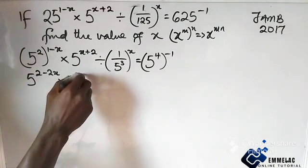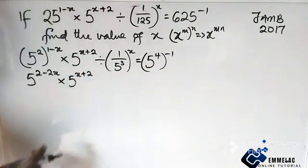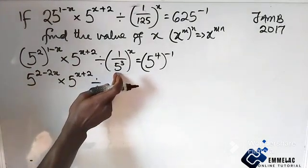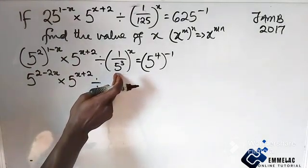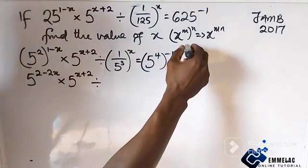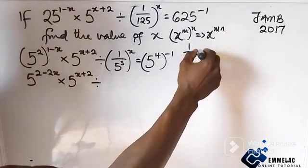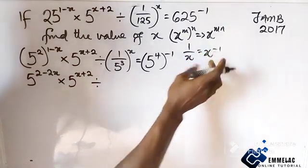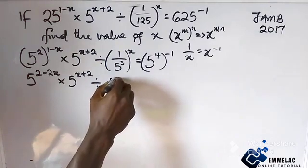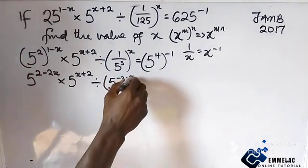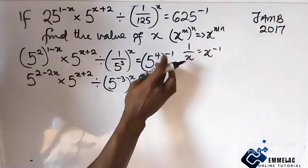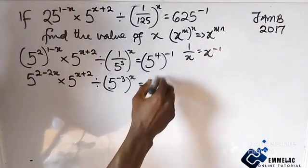So here we have 5 raised to power 2 times 2x, then times 5 raised to power x plus 2. Now, applying the reciprocal law — since 1 over x equals x raised to power minus 1 — we now have 5 raised to power minus 3x. Note that the x is carried in the power.